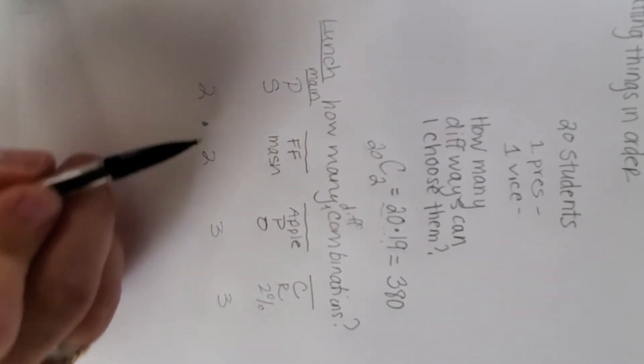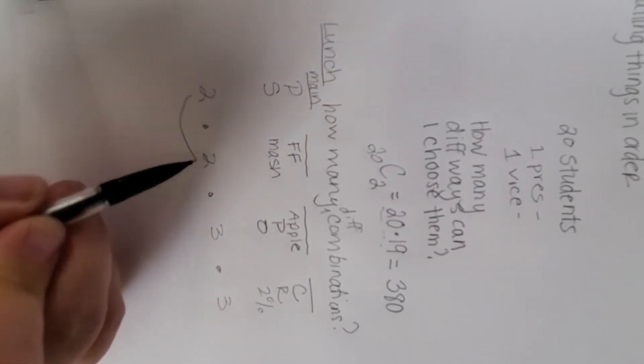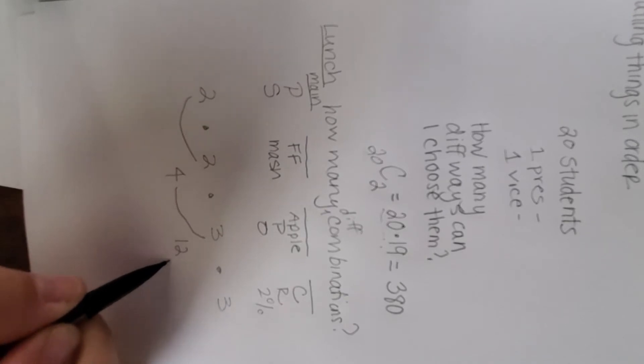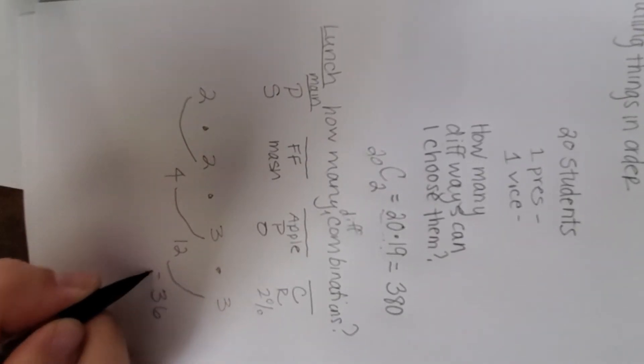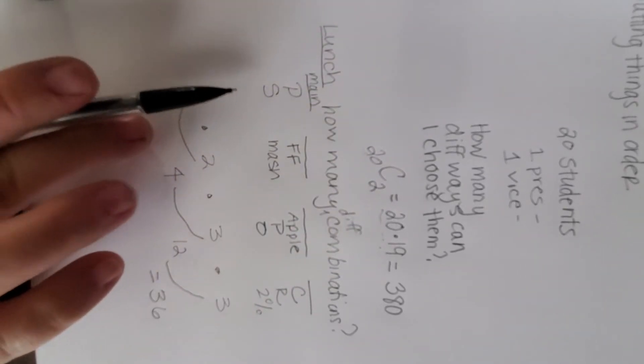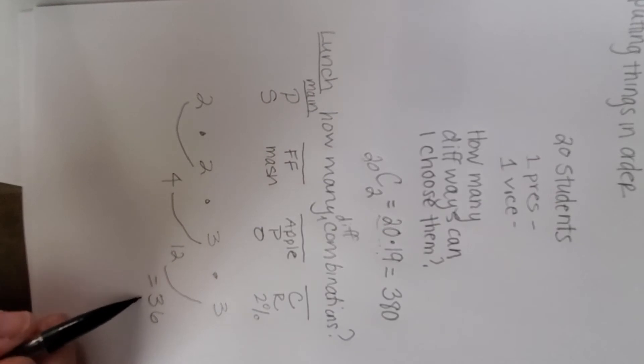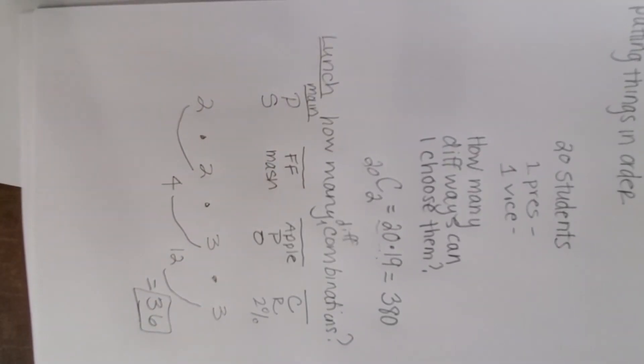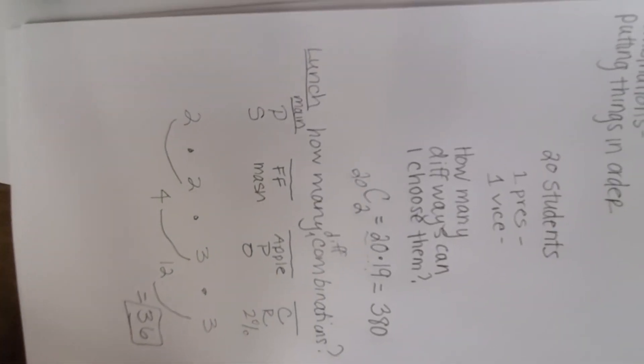So 2 times 2, times 3, times 3. So 2 times 2 is 4, times 3 is 12, times 3 again is 36. So if I had just these choices, how many different lunch combinations could I make? I could make 36 different lunch combinations. So it's all about the number of choices that you have.